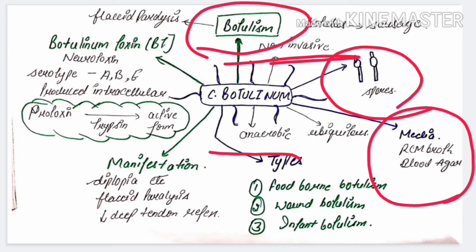The media used for diagnosis of Clostridium botulinum are Robertson's Cooked Meat broth and blood agar. In Robertson's Cooked Meat broth, it produces turbidity, the meat turns black, and there is foul odor production. On blood agar, the colonies are large, irregular, semi-transparent, and hemolytic with a fimbriated border.